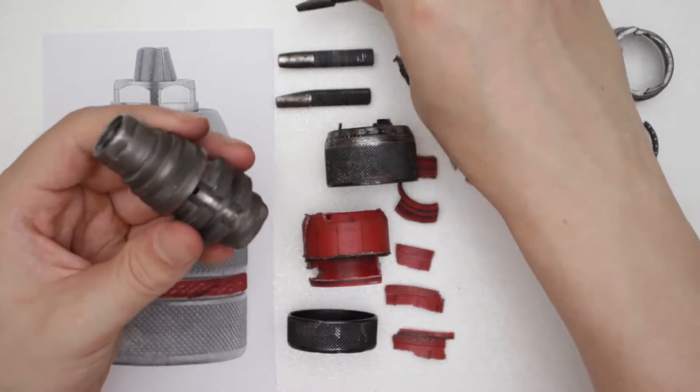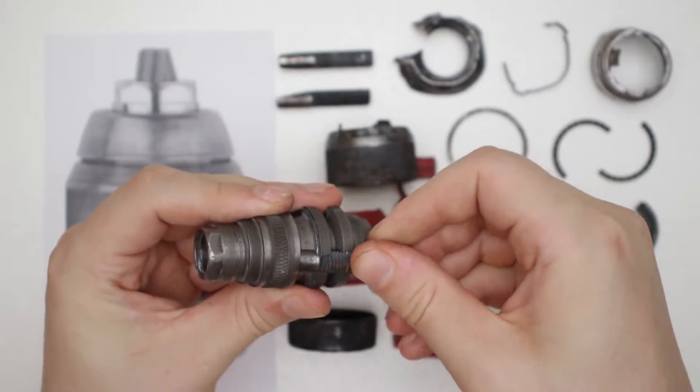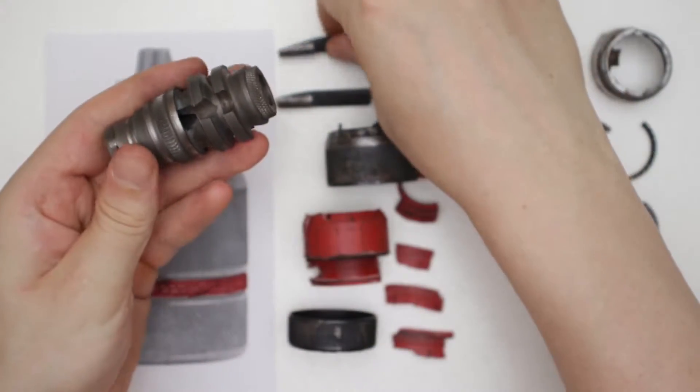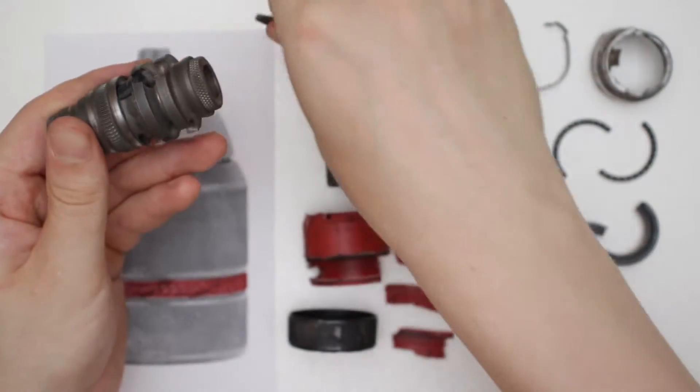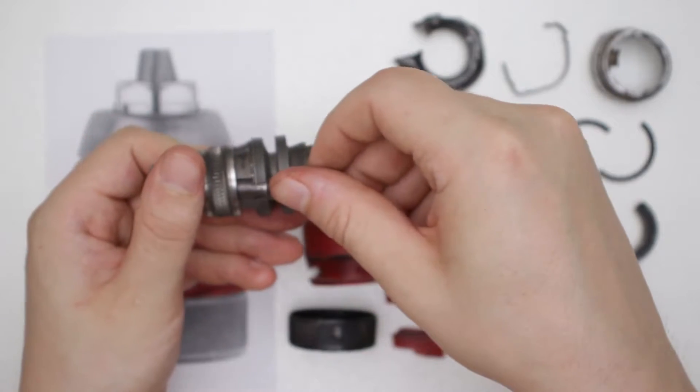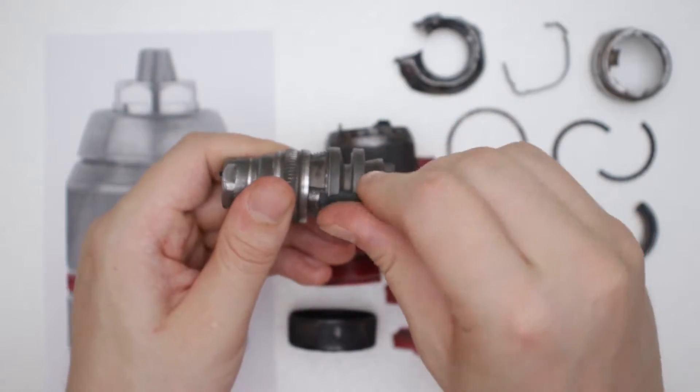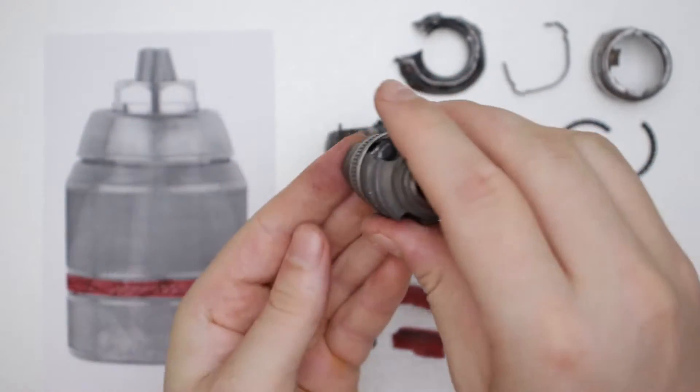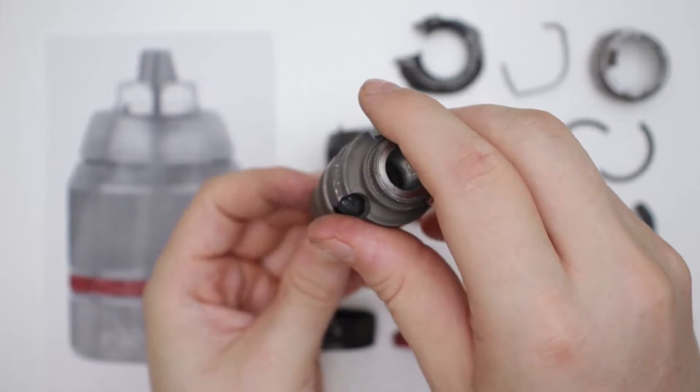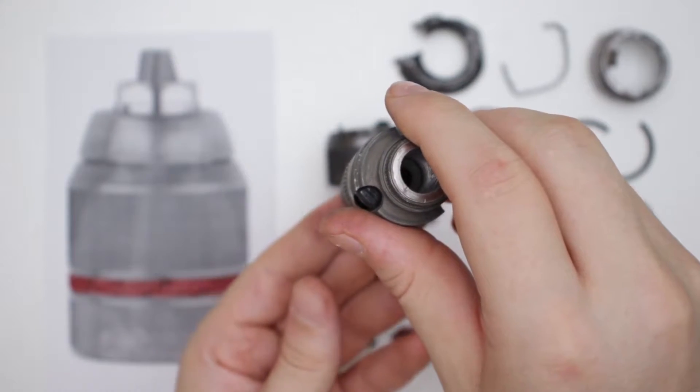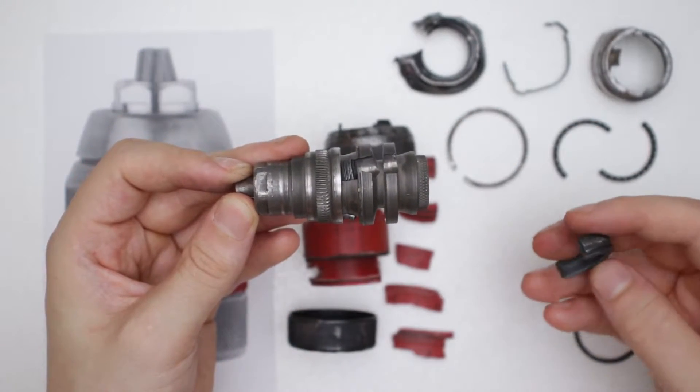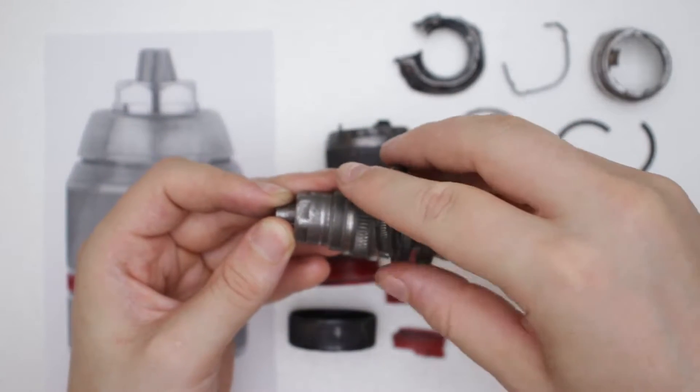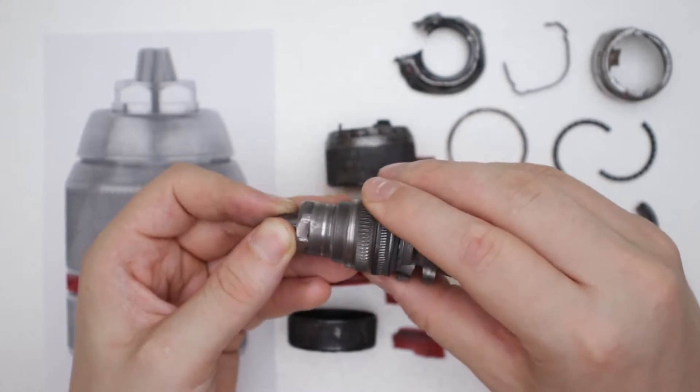So these jaws go in here, one, two, three, make sure they all extend the same. And the nut goes around here. I think they made it in two pieces so it can be assembled.